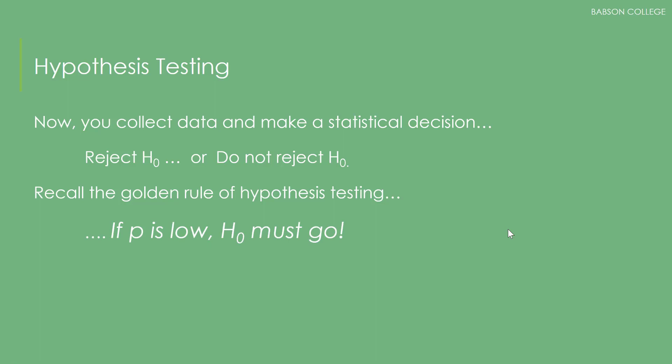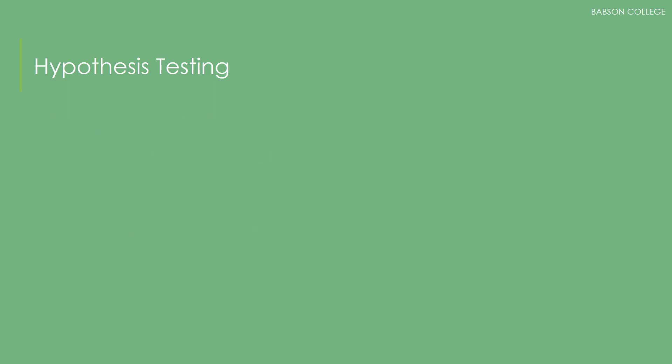Just to make sure we're clear, that means we reject HO. And low is usually less than 0.05. Don't forget about the Type 1 and Type 2 errors.